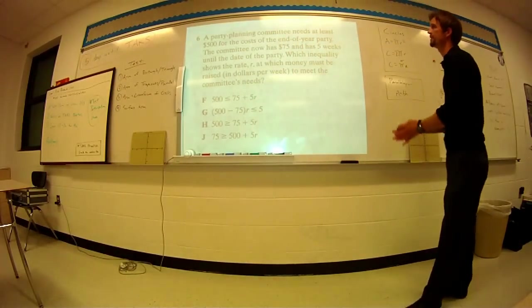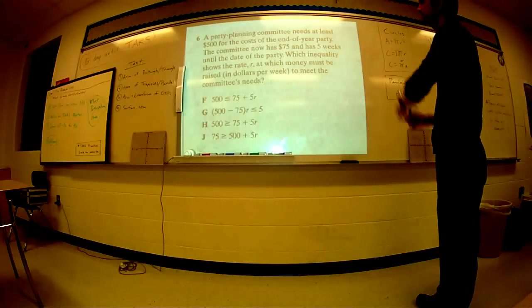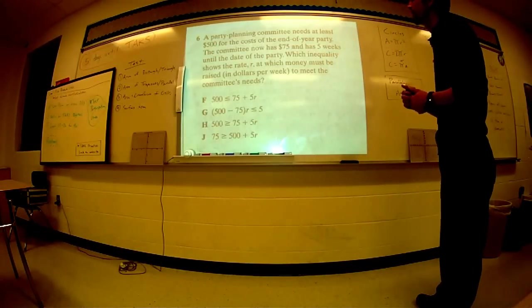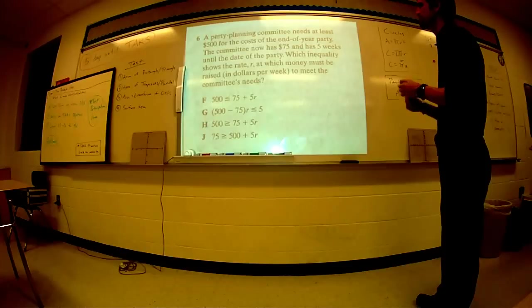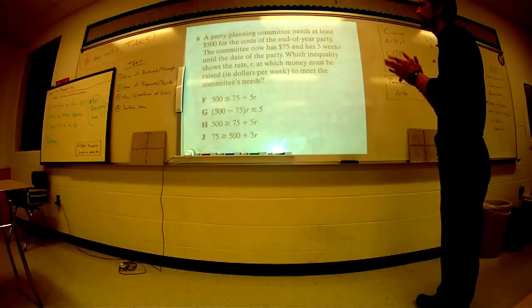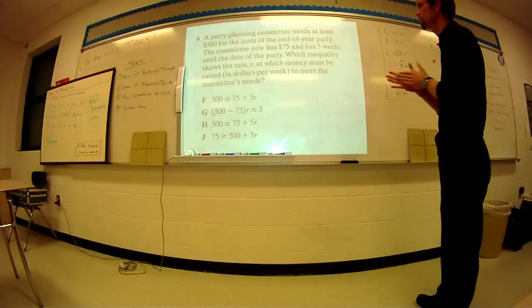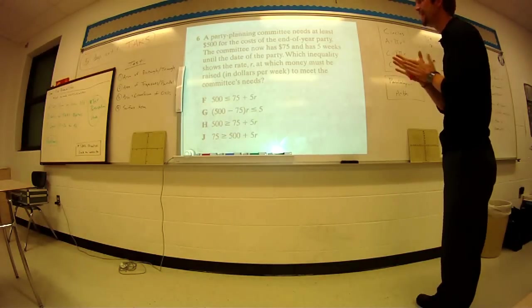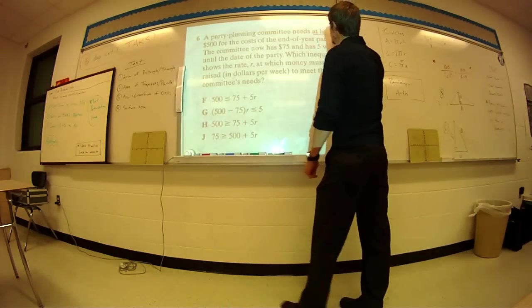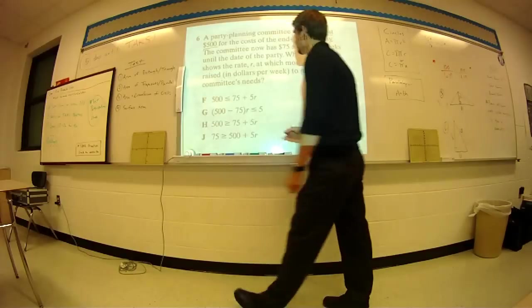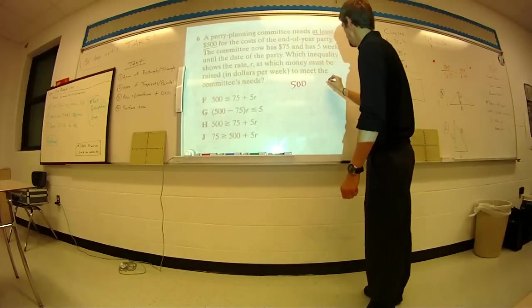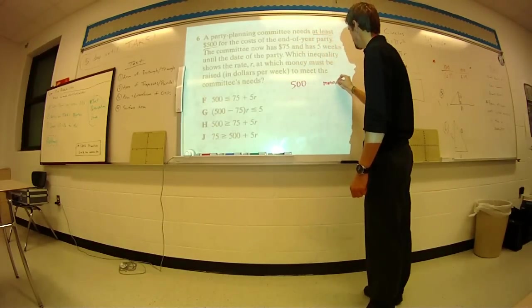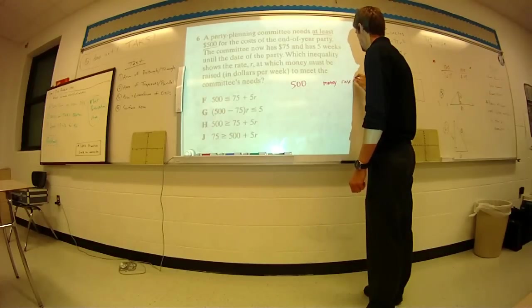Number six says the party planning committee needs at least $500 for the cost of the end-of-year party. The committee now has $75 five weeks until the date of the party. Which inequality shows the rate R at which money must be raised in dollars per week to meet the committee's need? First of all, how much do they need? They need at least $500. So we have $500 on one side, and we have the money raised on the other.